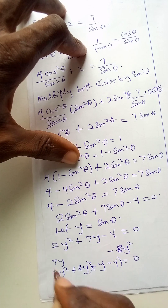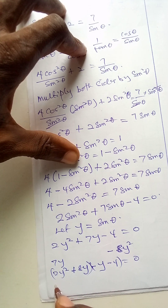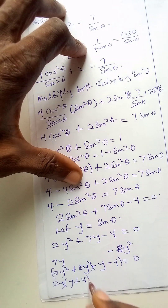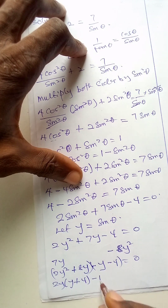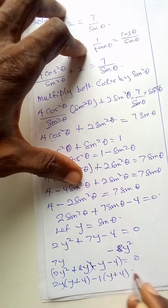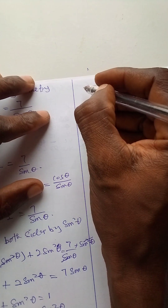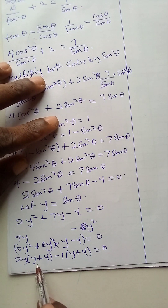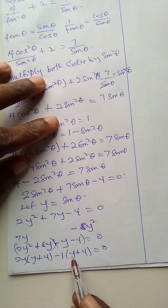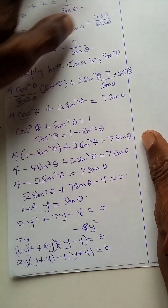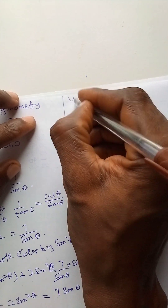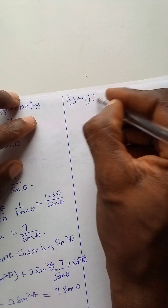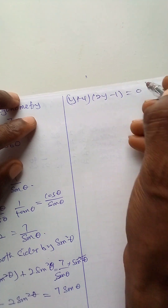I will group. What is common in the first bracket is 2y — bringing 2y out gives y plus 4. In the second group, minus 1 times y plus 4 is equal to 0. So the expression is 2y(y plus 4) minus 1(y plus 4) equals 0, which gives (y plus 4)(2y minus 1) is equal to 0.